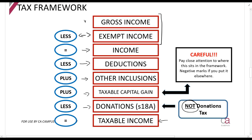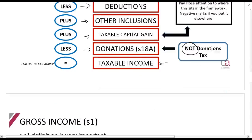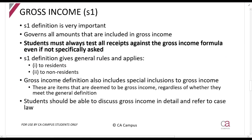Our focus here will be on gross income and exempt income. Gross income is a very important section, and you must test all of the receipts you're given in questions against the gross income formula, even if they don't specifically ask you. For example, they'll say Mr. X was involved in a motor vehicle accident when a drunk driver drove into him, and the drunk driver had to compensate him and pay him a million rands for injuries caused. You'll have to immediately apply the definition in your head.